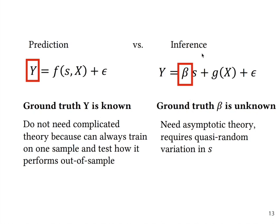For inference however, ground truth is unknown and we need all the kind of theory behind. We need asymptotic theory. If we want causal interpretation for beta we need to have some quasi-random variation in s which we can capture and then estimate the effect of schooling on Y.